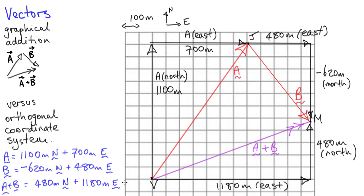I just need to make a final word about notation here. I've used the symbols N and E to mean vectors that point in the directions north and east respectively, but with just a single unit of length each.